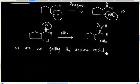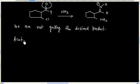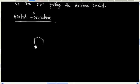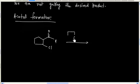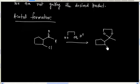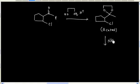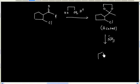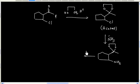So we will use acetal formation. We have this molecule — first let us treat it with ethylene glycol to form the acetal. Now ammonia can act as a nucleophile and we will have this substitution product. And finally we can do hydrolysis to regenerate the carbonyl group.